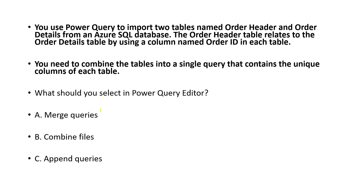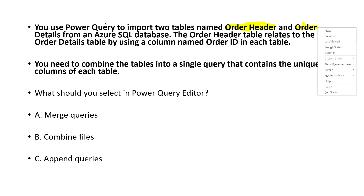Next question: you use Power Query to import two tables — Order Header and Order Details — from a SQL database. The Order Header table relates to Order Details by the column Order ID. You need to combine the tables containing unique values. When joining two tables on a single column, that is Merge Query in Power Query. Append Query is different — it combines two tables where the number of columns, column names, and data types are the same.